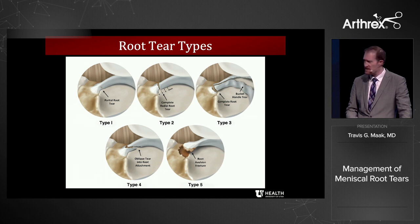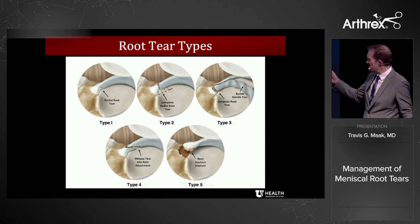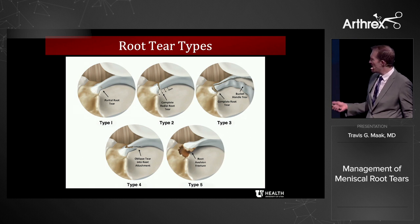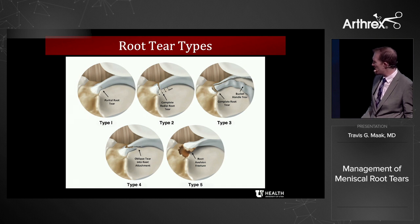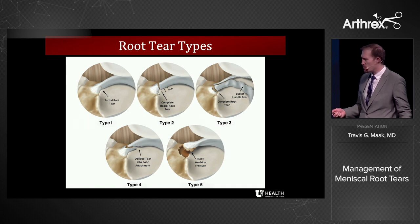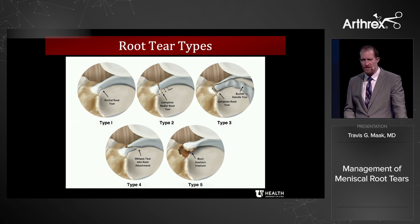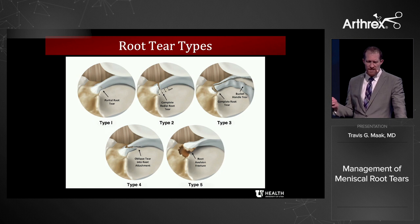There are many types of root tears: partial complete radial root, complete radial root tear off the ligament, oblique tears, and root avulsion fractures — all of these deem the meniscus incompetent.